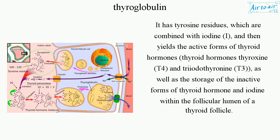Thyroglobulin also serves in the storage of the inactive forms of thyroid hormone and iodine within the follicular lumen of a thyroid follicle.